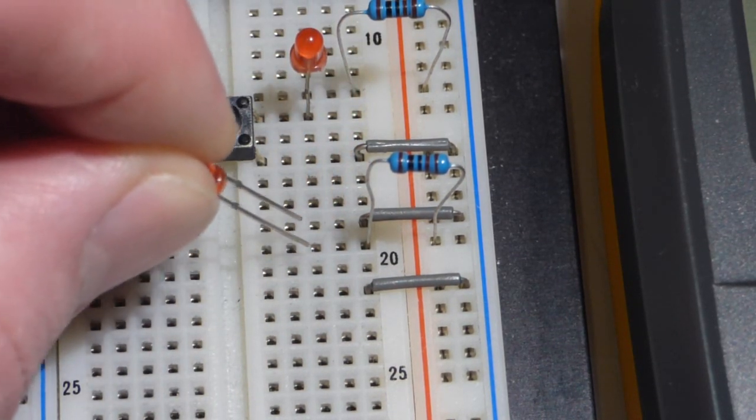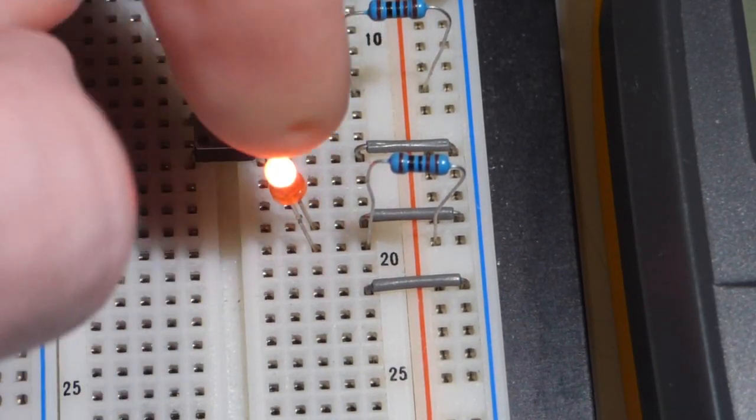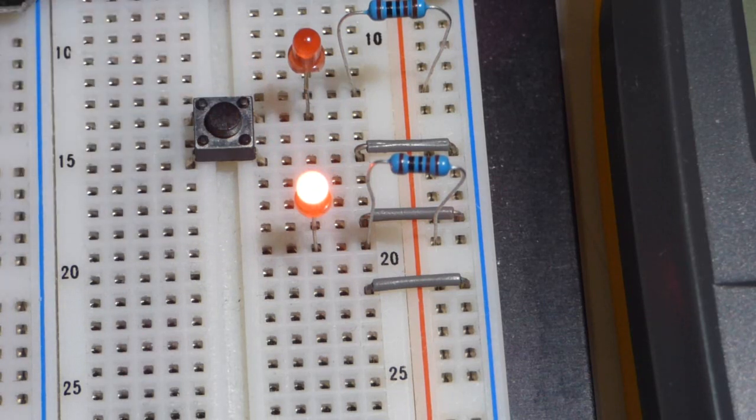Short lead, the cathode, up one row, which goes to this gray jumper, which plugs into the negative rail. That's the way you need it wired to conduct. So that's just basic electricity stuff.